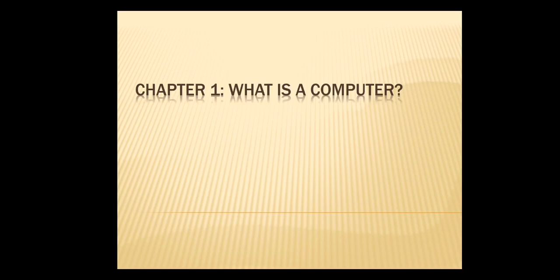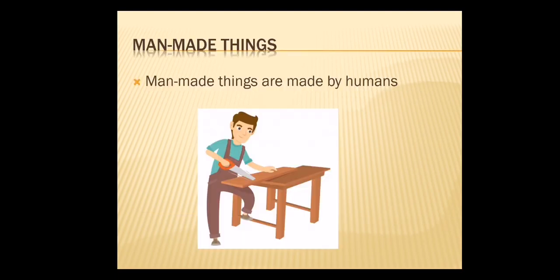Hello children, this is video 2 chapter 1 in computer science. Today we will see the topic man made things. Man made things are made by humans.